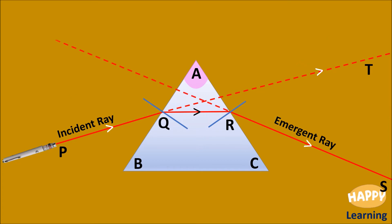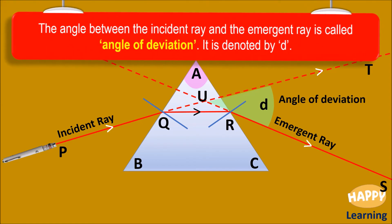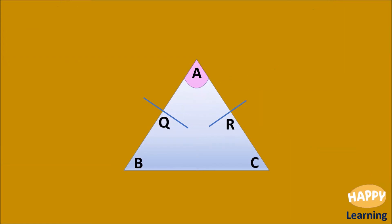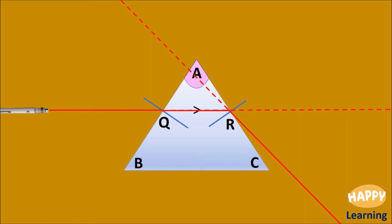If you extend the incident ray and the emergent ray, they meet at a point U. The angle between the incident ray and the emergent ray is called angle of deviation. It is denoted by D. This is the incident ray and this one is the emergent ray.